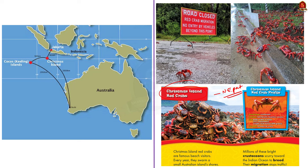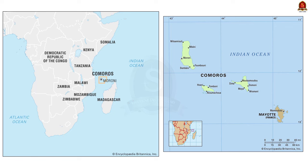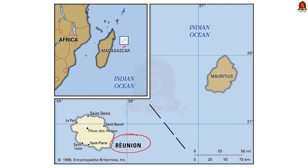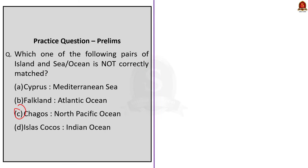Christmas Island is located in the northeastern part of the Indian Ocean to the south of Java — it is an Australian territory known for its unique ecosystem including the annual red crab migration. Cocos Island is located to the southwest of Indonesia, also a territory of Australia, known for its coral atolls and diverse bird life. Comoros Island is located between Madagascar and Mozambique, an archipelago with a unique blend of African, Arab and French culture. Reunion Island is an overseas department of France, located approximately 950 km east of Madagascar and 175 km south of Mauritius — it is part of the Eurozone. So the correct option is C.